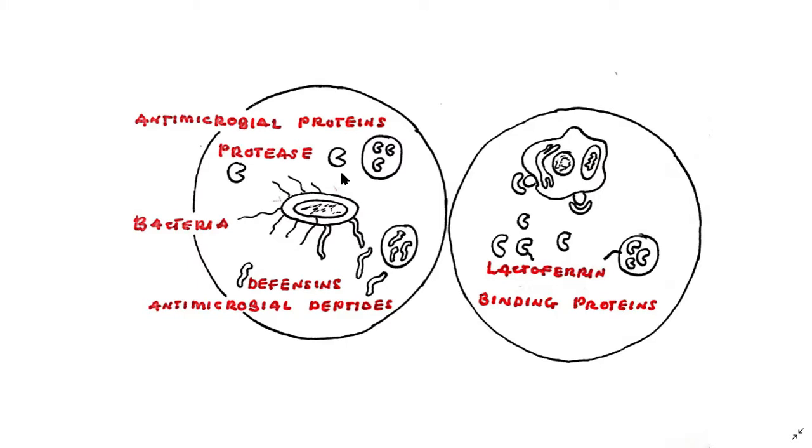Immune cells also use antimicrobial peptides. Now antimicrobial peptides are similar to antimicrobial proteins in that they also attack and kill the bacteria. Some antimicrobial peptides like defensins attack bacterial cell membranes.